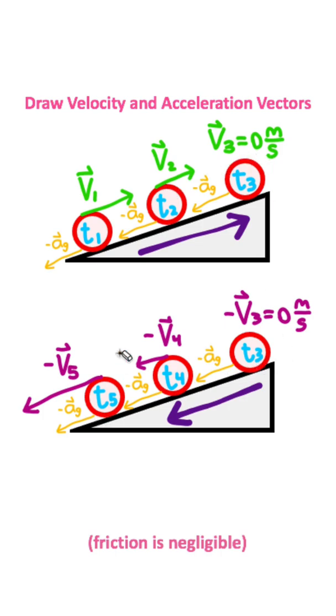Notice as we go back down the ramp, the velocity vectors and the acceleration vectors are both pointing in the negative direction, causing the velocity vectors to increase as we go down the ramp.